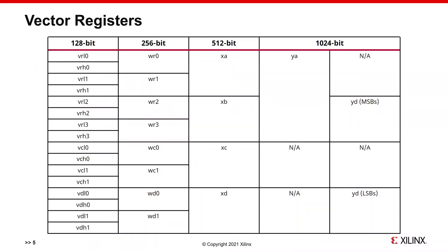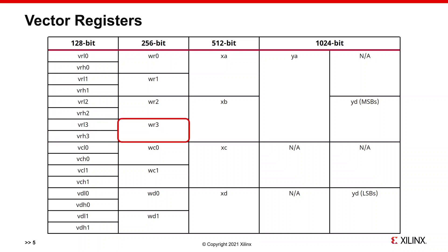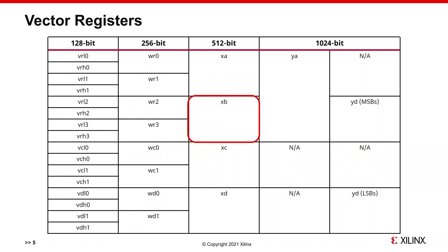The basic hardware vector registers are 128-bit wide. These are the V-registers. Two V-registers can be grouped into 256-bit W-registers. Further grouping of W-registers makes 512-bit X-registers.